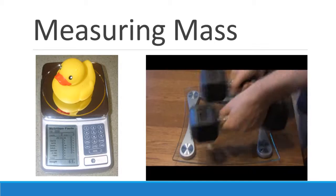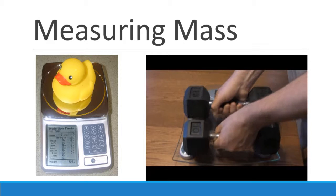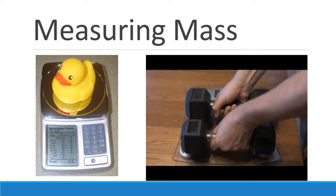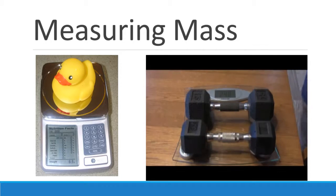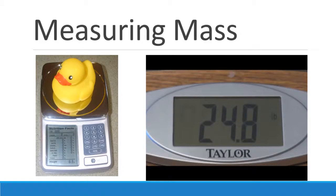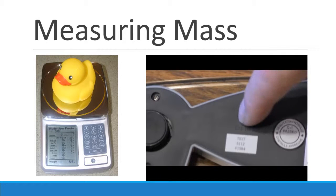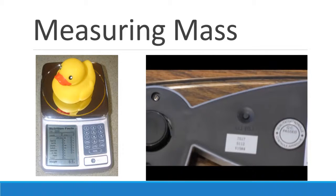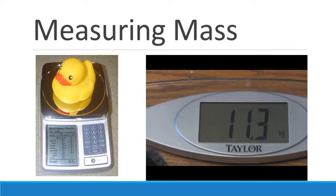How do we find mass? Most often we use balances, and in this case digital balances. This bathroom scale measures in pounds — 24.8 pounds is how it's measuring my 25 pounds of weight. On the underside of most digital scales is a switch that can switch over to kilograms. In this case, we get 11.3 kilograms. These are close — it's not a precise scale, it's a bathroom scale.